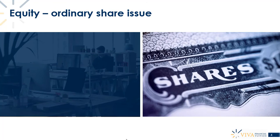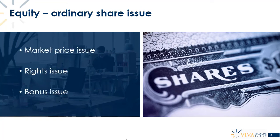Ordinary shares can be issued in three different ways. An issue at market price is where shares are sold for cash at market value. A bonus issue is where shares are given away for free — no cash is received, but those shares still carry voting rights and are potentially entitled to a dividend. A bonus issue is normally given to existing shareholders in proportion to what they already own, as a thank you for investing.